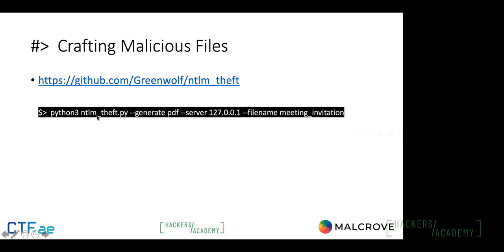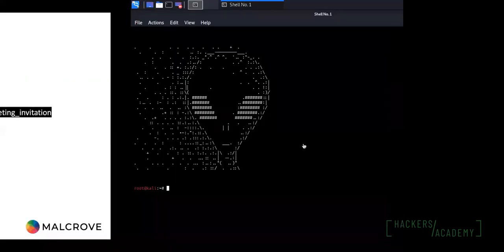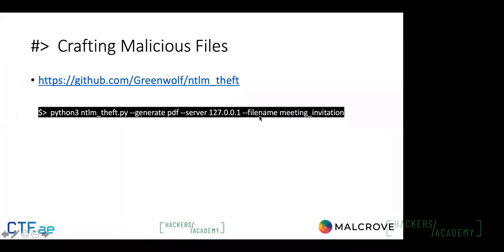It's Python 3, and we use the tool with the --generate flag to generate a PDF file. This is not only about PDF — it can also be an Excel file, Word document, RTF file, or TXT file, but for this demo we'll go with PDF. Then we use the --server flag and provide the attacker's IP address, and --filename to give the PDF file a name.